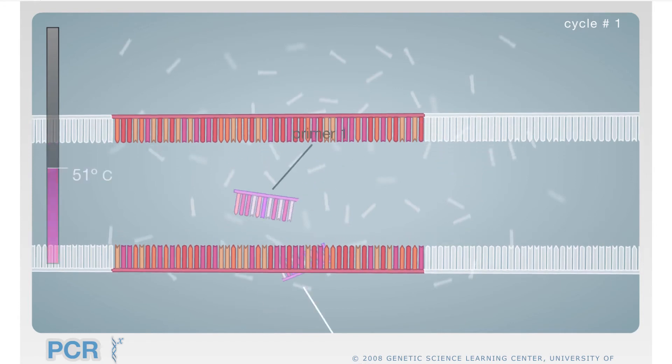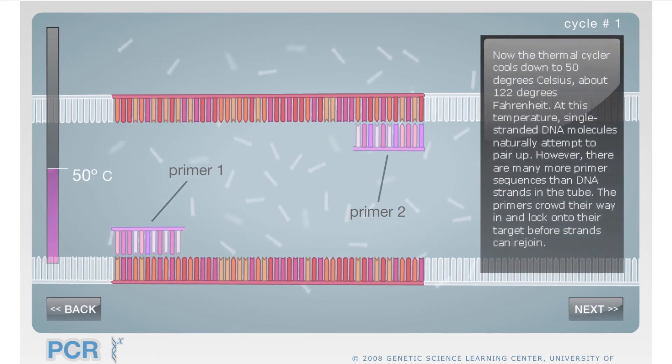Then the cycler will cool the tubes to 50 degrees Celsius and you can expect the two strands to rejoin. But since the two primers have attached first to the specific target ends of the sequence, the two strands are blocked and stay separated.